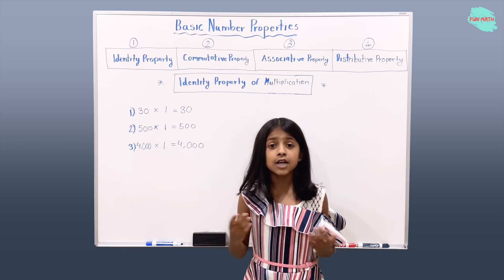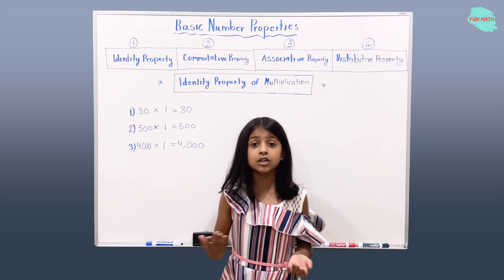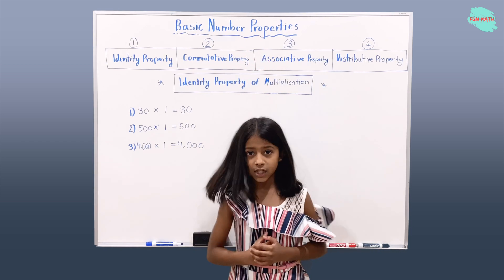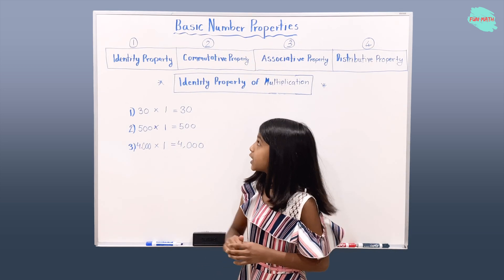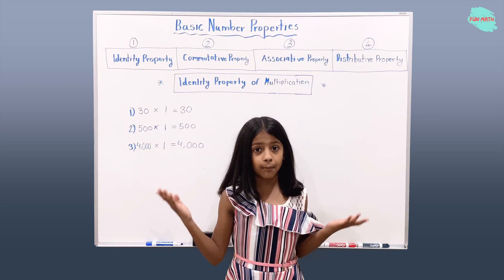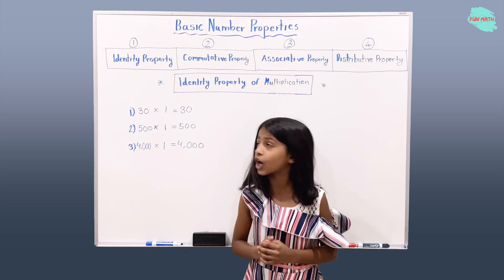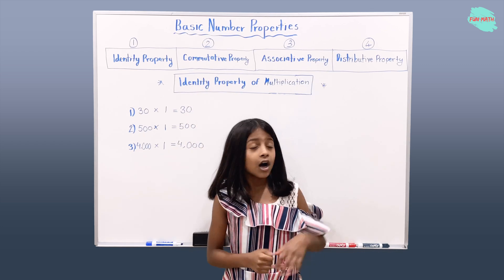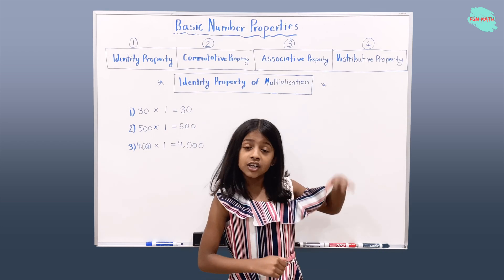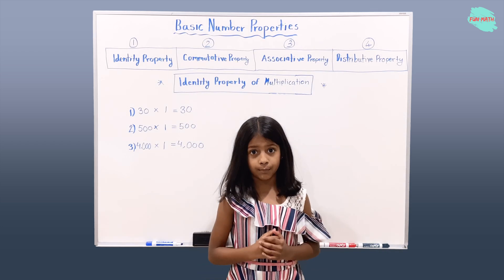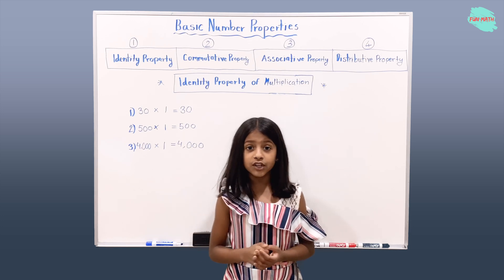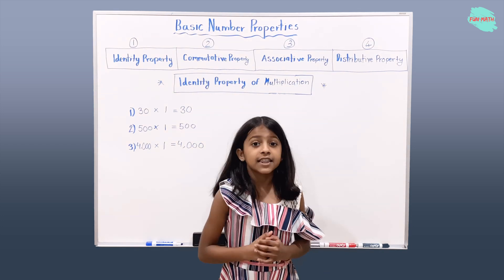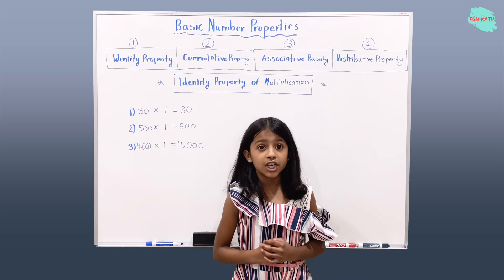Alright, so now to review what we learned today. We learned about the basic number properties. Here we had four different types of properties, which are the identity property, commutative property, associative property, and distributive property. In the next video, we will be talking about the commutative property. Thanks for watching. Bye!